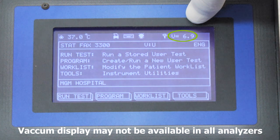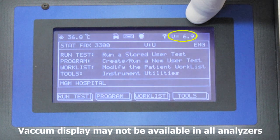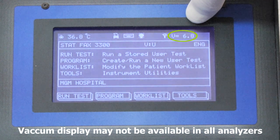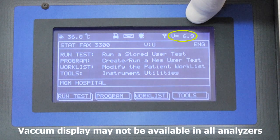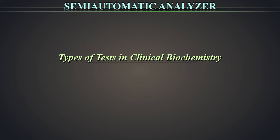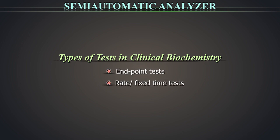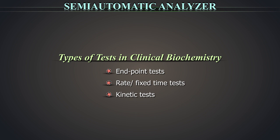Vacuum should be maintained at 6.9 ±1. This is very important for sample aspiration and analysis. If the vacuum is not maintained, immediately switch off the equipment and call the technical support team. Types of tests in clinical biochemistry: endpoint tests, rate or fixed time tests, and kinetic tests. We will discuss one example of the endpoint test in this tutorial — the measurement of glucose by glucose oxidase peroxidase, i.e. the GOD-POD method.